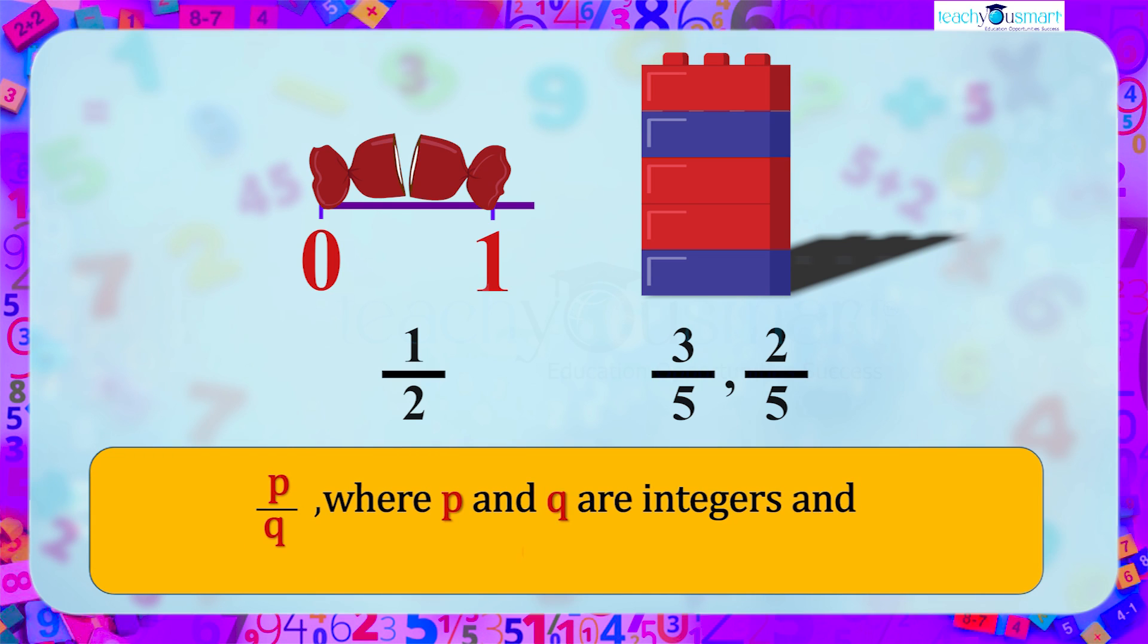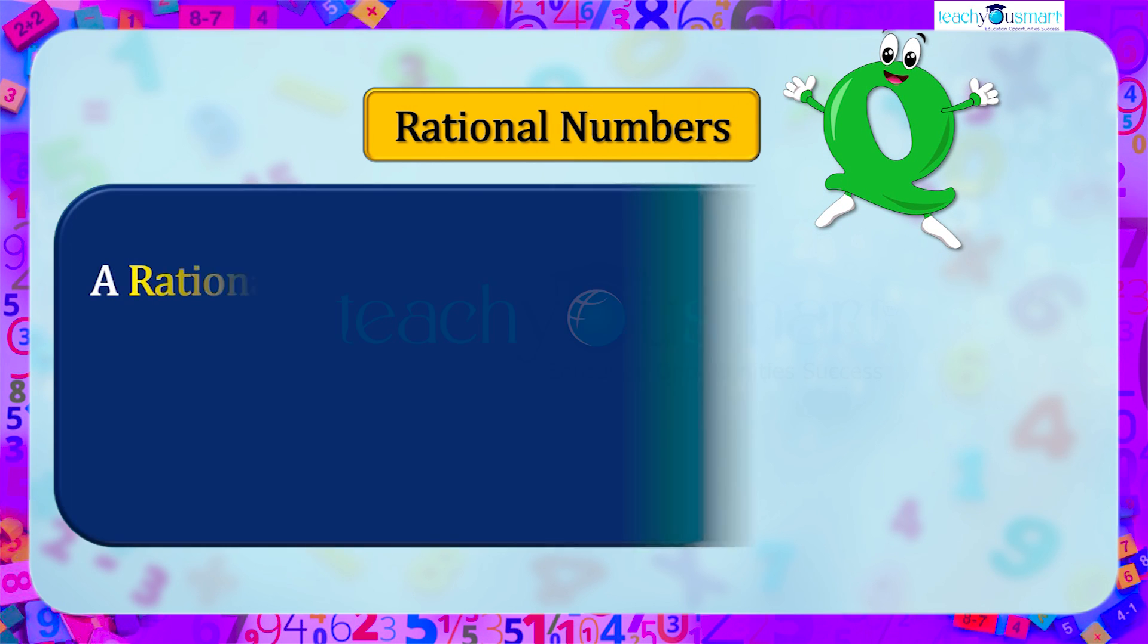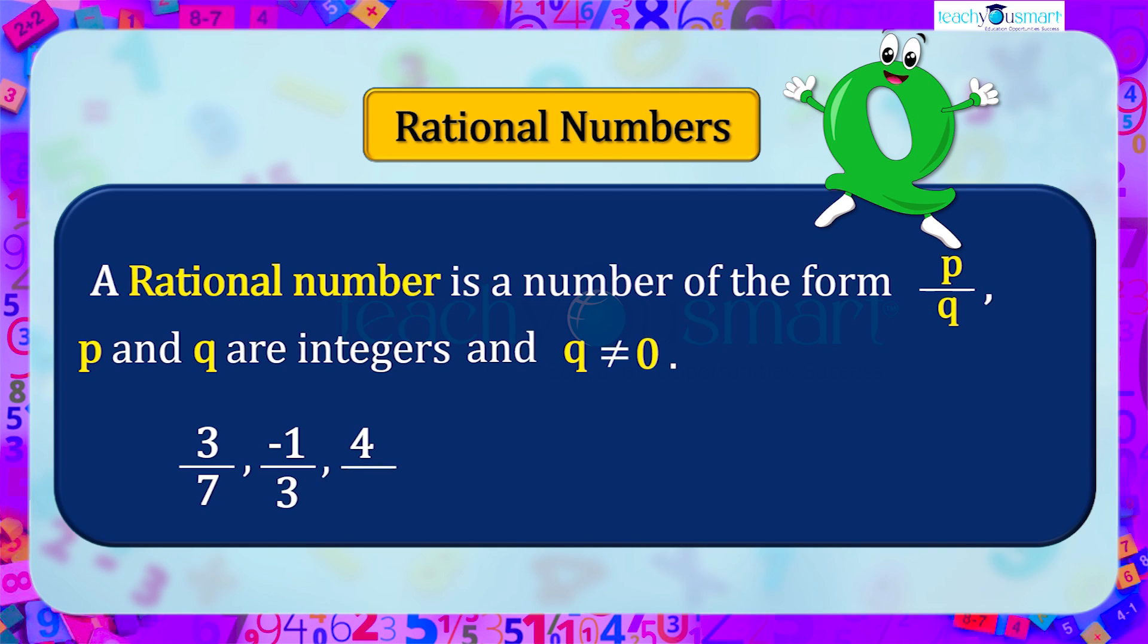Where p and q are integers and the denominator q not equal to 0. Such numbers are called rational numbers, denoted by Q. That is, a rational number is a number of the form p by q, where p and q are integers and q is not equal to 0. 3 by 7, minus 1 by 3, 4 by 5, etc. are some rational numbers.